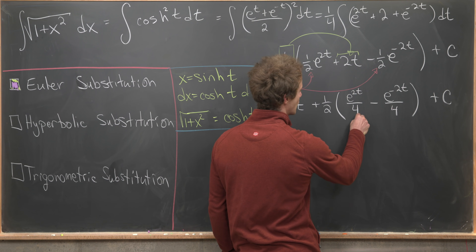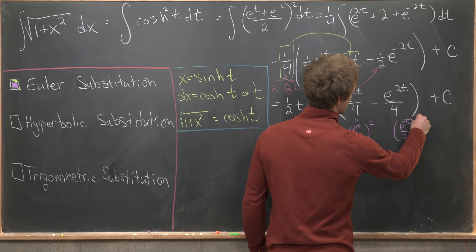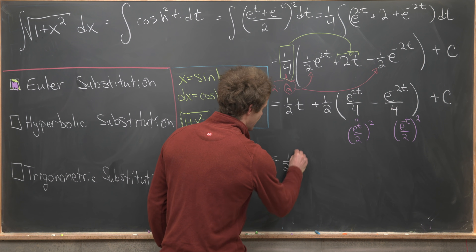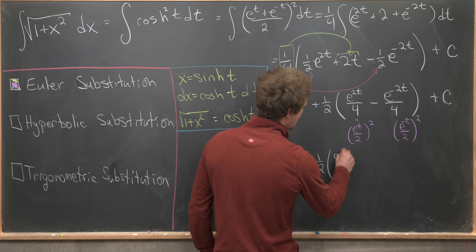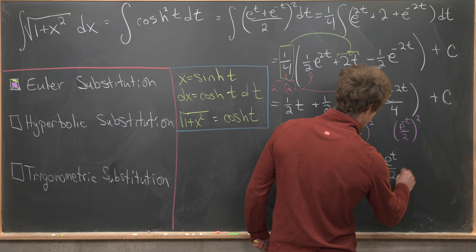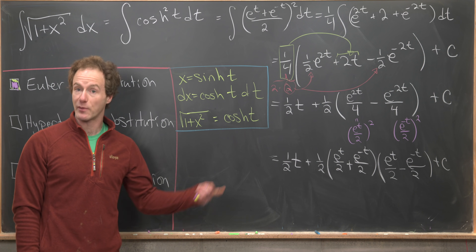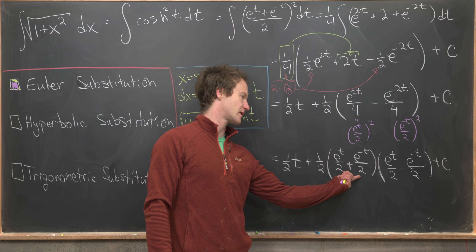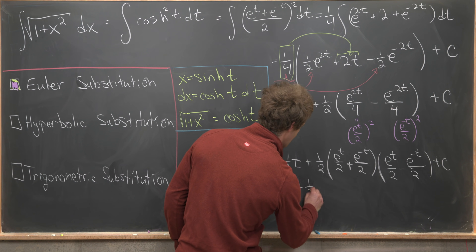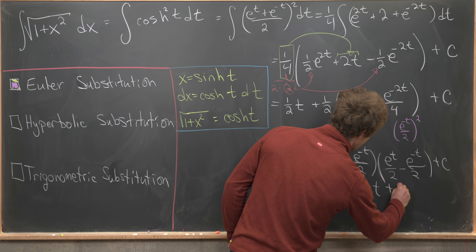Recognizing that e^{2t}/4 is (e^t/2)² and e^{-2t}/4 is (e^{-t}/2)², this is another difference of squares. Factoring gives one-half t plus one-half times (e^t/2 + e^{-t}/2)(e^t/2 − e^{-t}/2). These factors are exactly cosh(t) and sinh(t), so we can write this as one-half t plus one-half sinh(t) cosh(t) plus C.